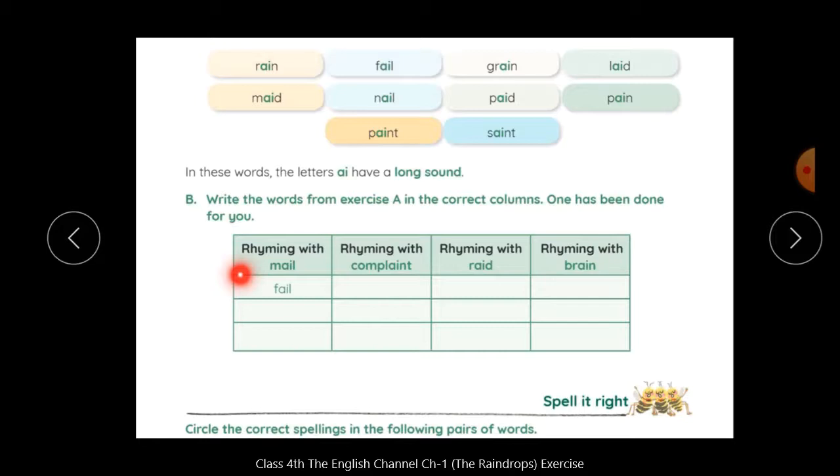Look, you have to choose the correct words with mail. Mail rhyming word, what was the correct word? Fail. So, you have to choose the correct word. Nail. Complaint, which is a word? Saint. So, you have to fill here. Paint. This is another word. You will write here, paint.